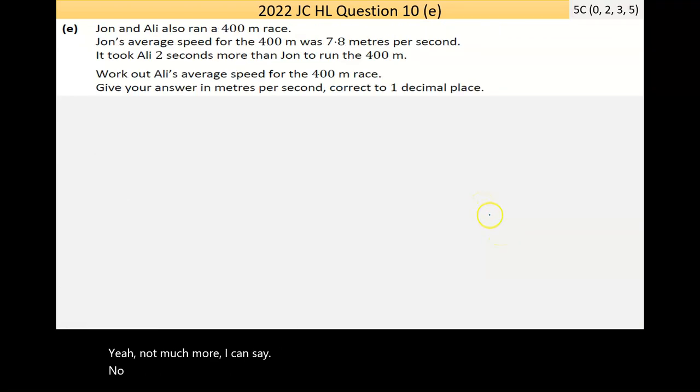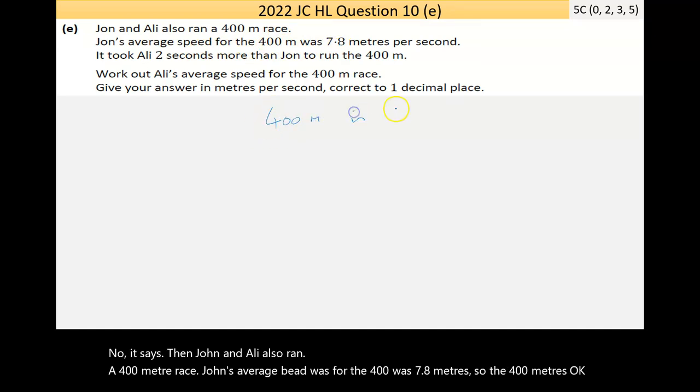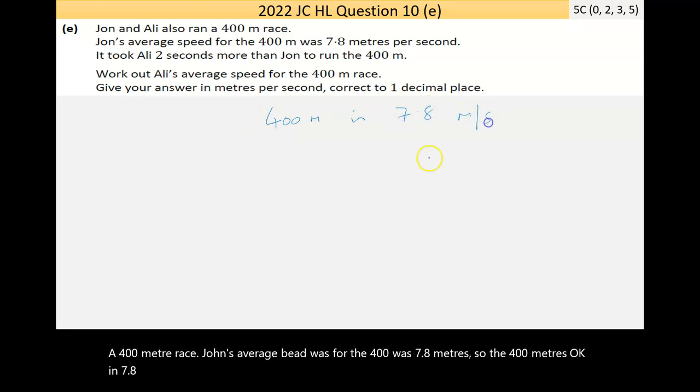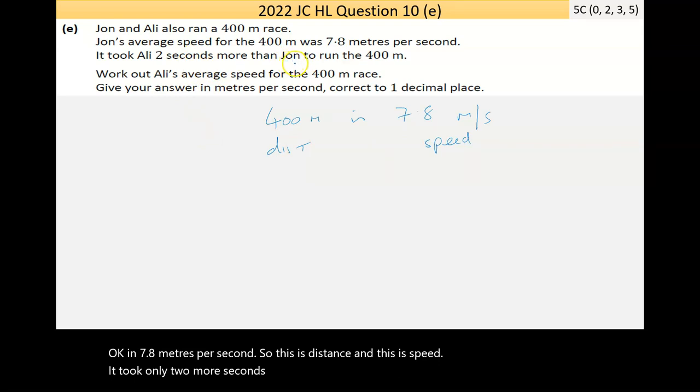Now it says then, John and Ali also ran a 400 meter race. John's average speed for the 400 was 7.8 meters per second. So 400 meters in 7.8 meters per second. So this is distance and this is speed. It took Ali two more seconds than John to run the 400 meters. Work out Ali's average speed for the 400 meter race. Give your answer in meters per second, correct to one decimal place.